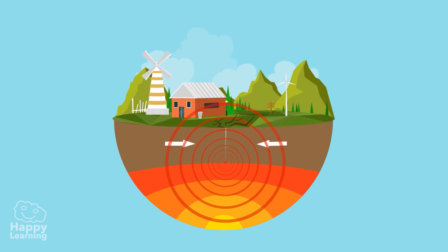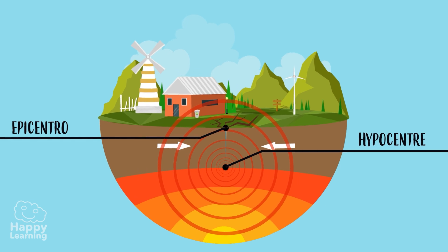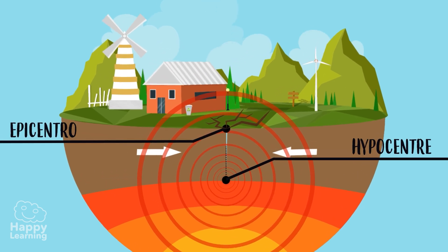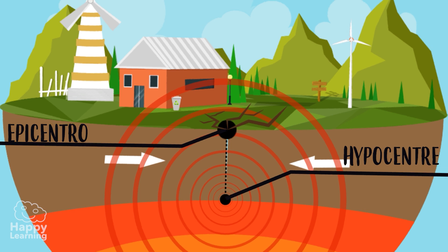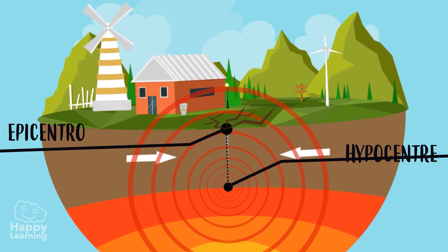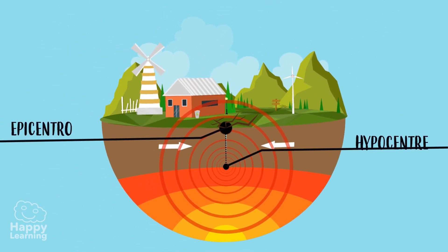In an earthquake we could differentiate two parts: the hypercentre, which is the point in the earth where the earthquake originates from, and the epicentre, being the point on the earth's surface vertically above the hypercentre. This point is where the earthquake is most intense and the greatest damage is caused.